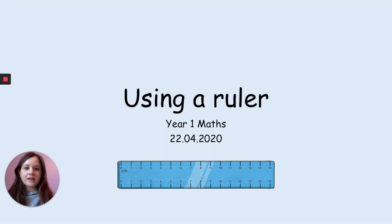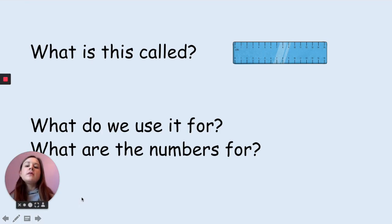Today in maths we are going to be learning about using a ruler to do measuring. Yesterday we were learning about non-standard measuring with counters and cubes or maybe whatever toys you used at home. Today we're going to be using a ruler because that helps us to make it more accurate. Accurate means that we really know how much it measures, we're not just guessing.